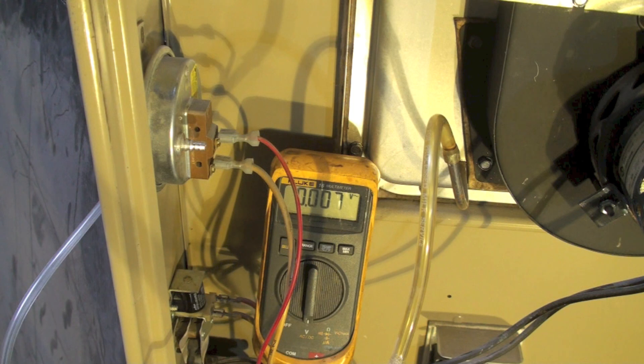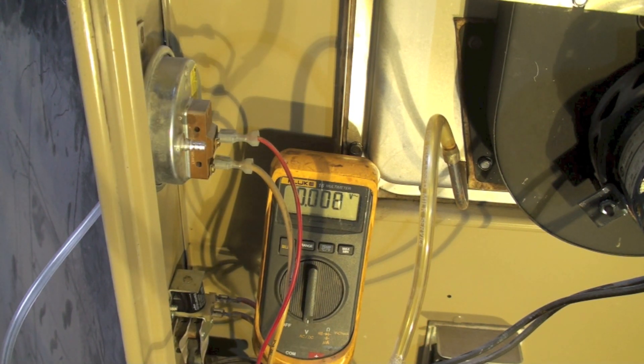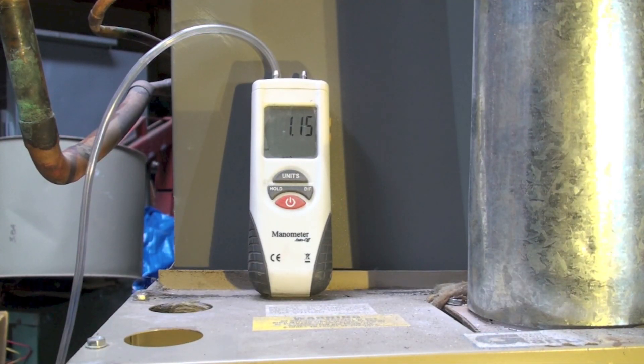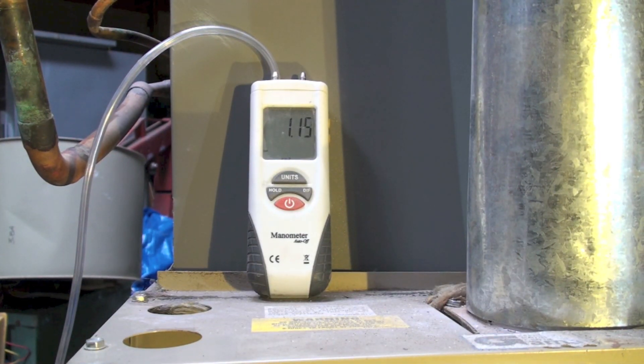Those are pressure switch problems in this thing. And here what I'm showing you are what the vacuum is that the inducer pulls when there's no blockage in the line.